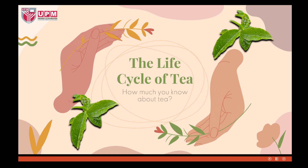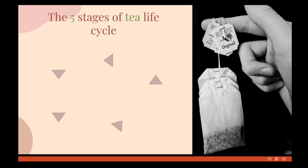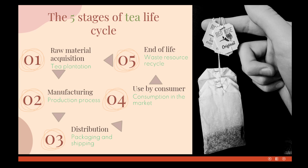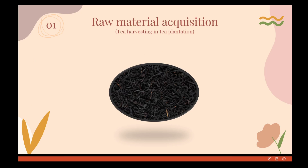Hello everyone, today I would like to present the life cycle of the tea and share some basic knowledge about tea with you. Are you ready for it? All right, let's start. The tea life cycle contains five stages, and I will explain them one by one. The five stages are: raw material acquisition, manufacturing, distribution, used by the consumer, and end of life.